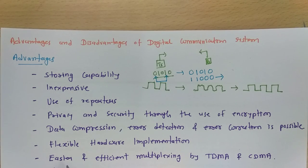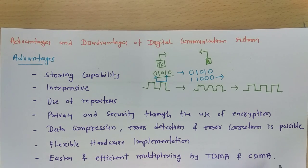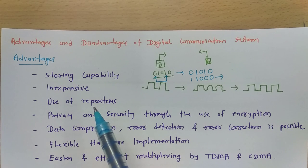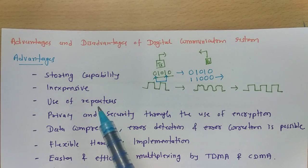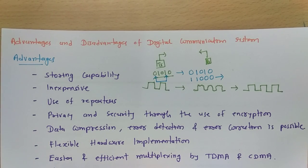When working with multiple signals in digital communication systems, it is easier and more efficient to perform multiplexing using Time Division Multiplexing (TDMA) and Code Division Multiplexing (CDMA). This efficient multiplexing is not possible in analog communication systems. These are the various advantages that make digital communication systems so effective, which is why almost the entire world uses them today.